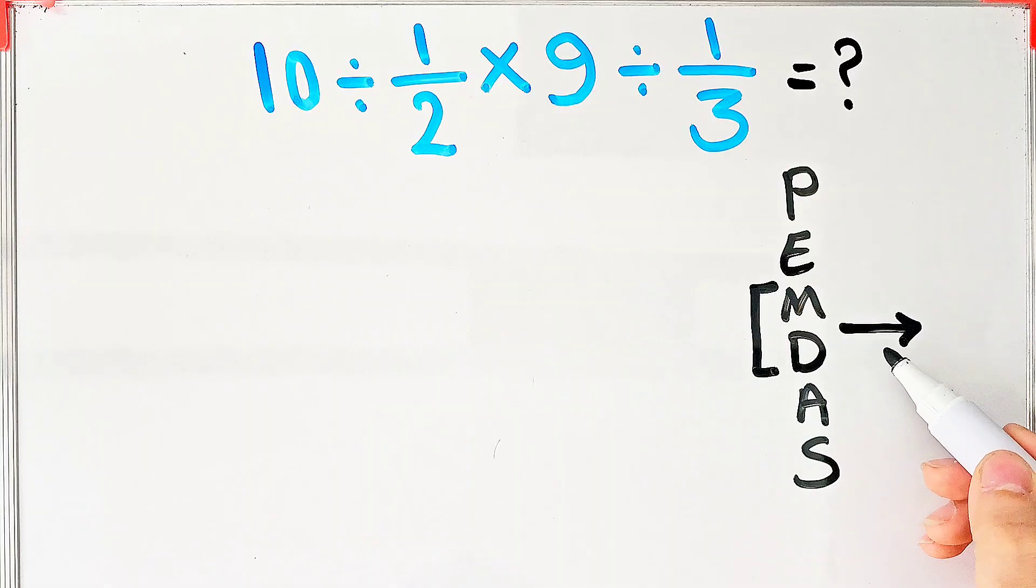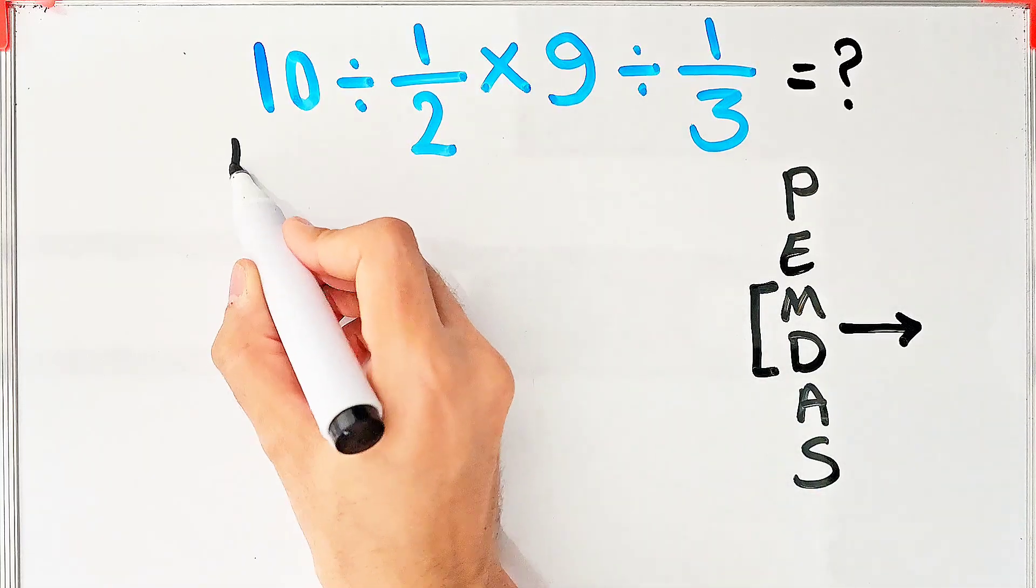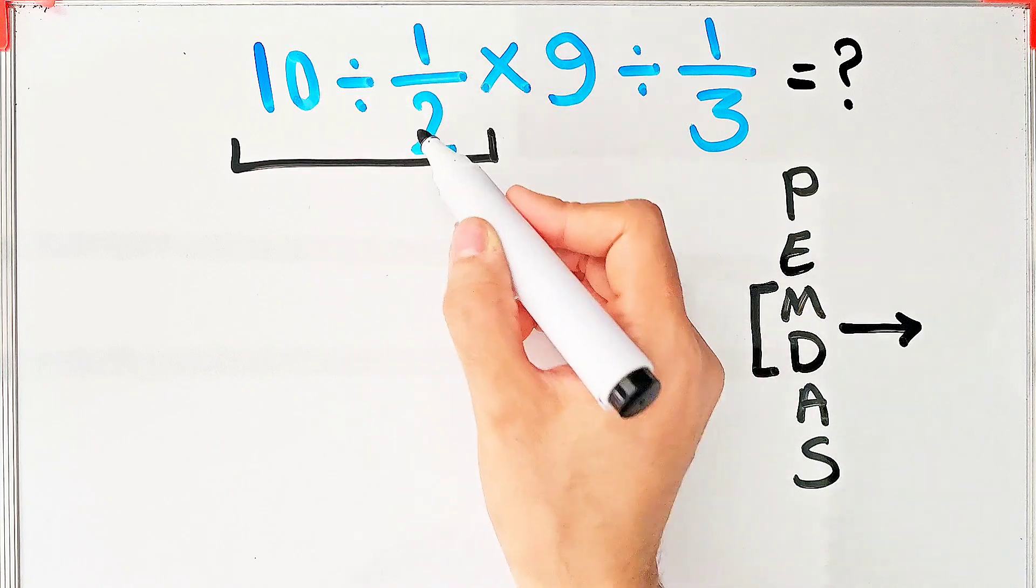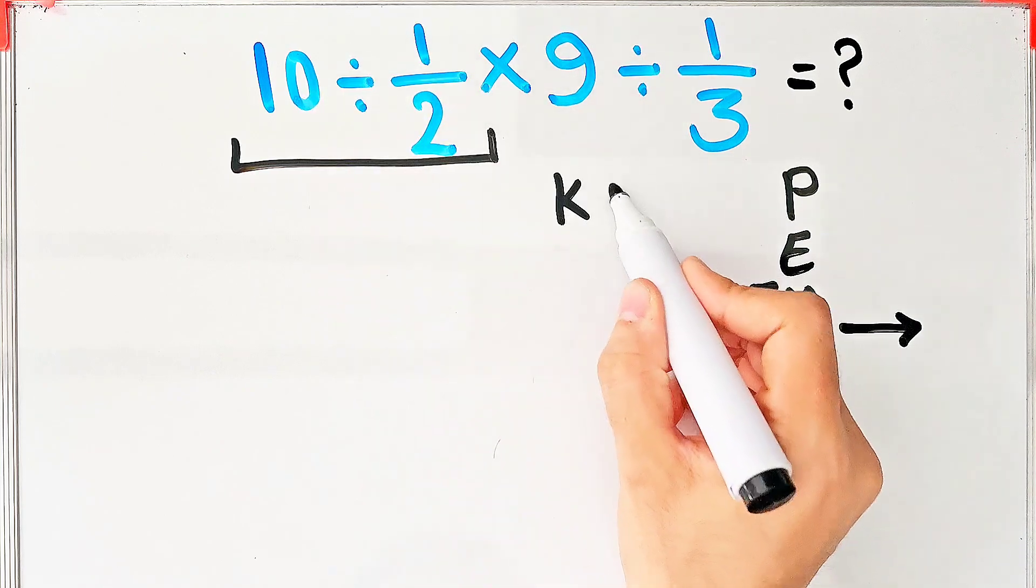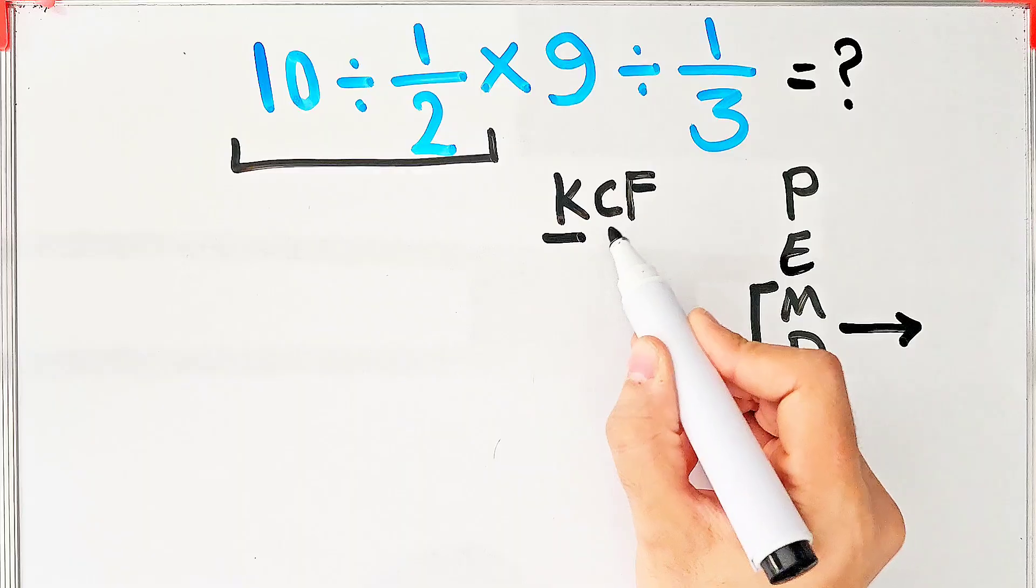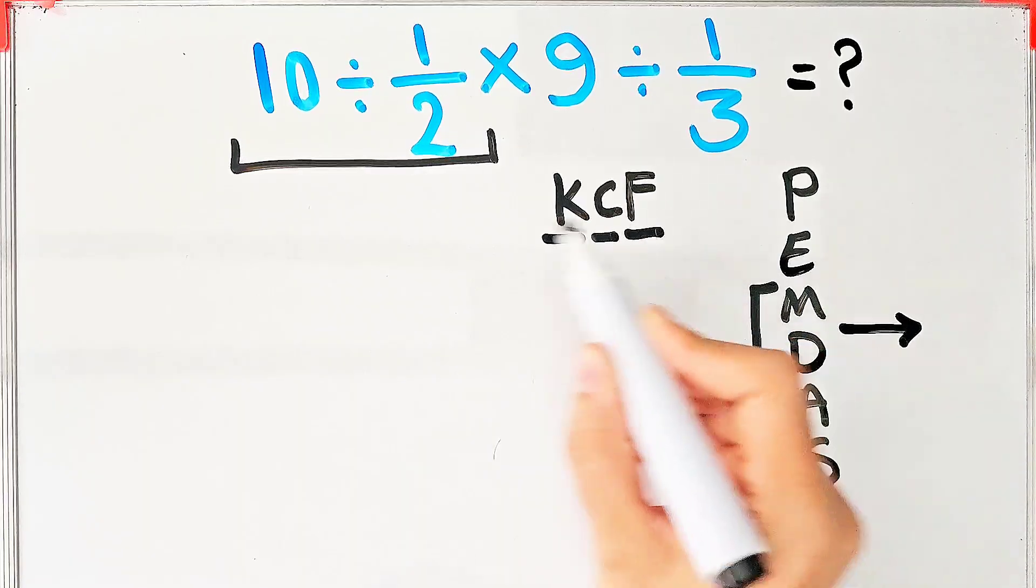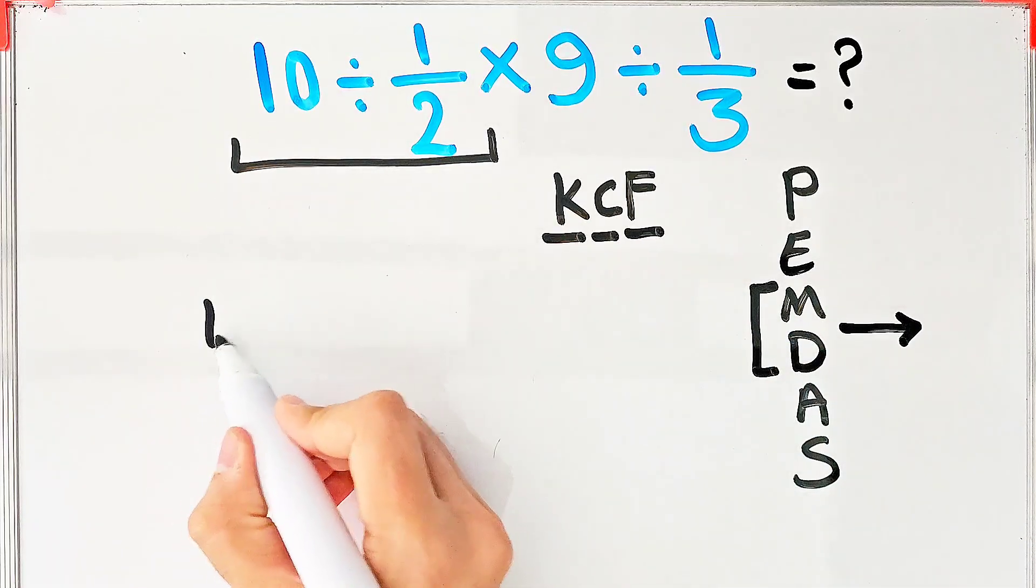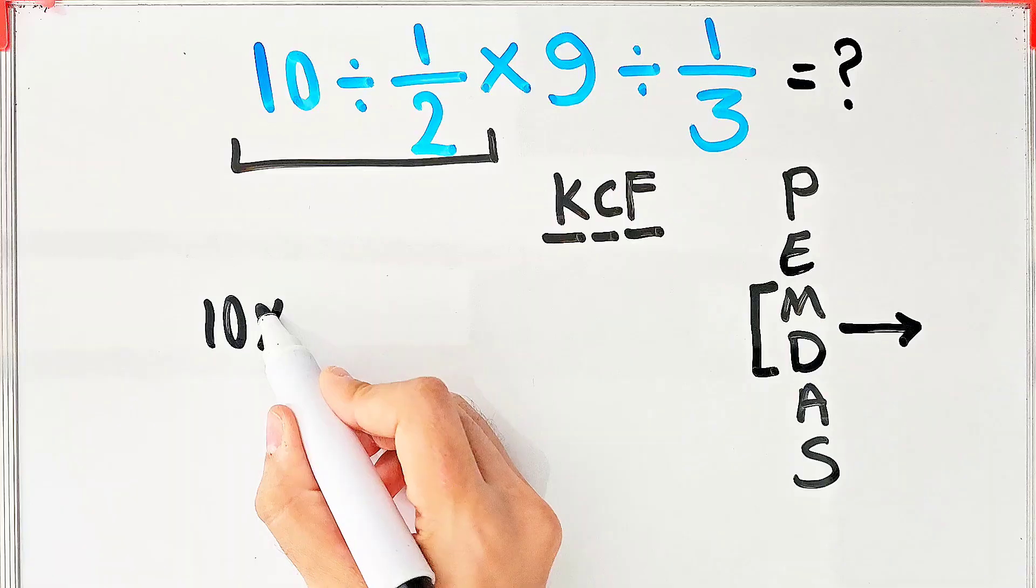We have 10 divided by 1 over 2. To solve this part, we need to follow the KCF rule. In this rule, K stands for Keep, C stands for Change, and F stands for Flip. We keep the first number as it is, then we change the sign, then we flip the second fraction.